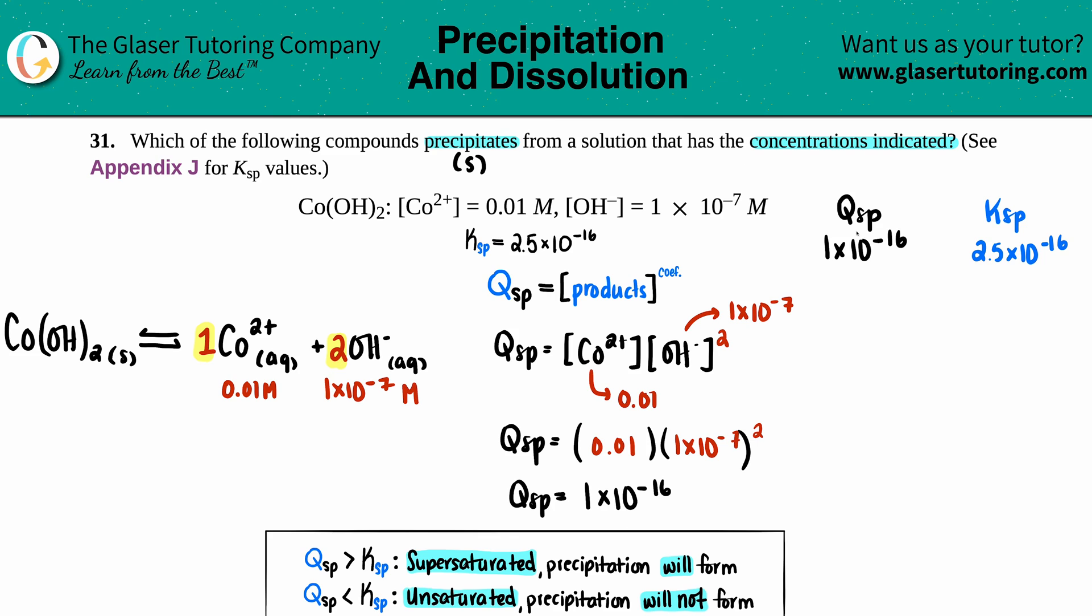First things first: always look at those exponents. If the exponents are different, that's the only thing you have to look at. But here the exponents are the same - both 10^-16 - so you just have to look at the first number.